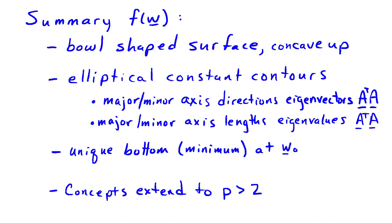The contours of constant value of f(w) are elliptical, and the major and minor axis directions correspond to the eigenvectors of AᵀA, while the major and minor axis lengths correspond to the eigenvalues of AᵀA. We've only drawn this for p = 2, but the concepts extend: for p = 3, the contours of constant f(w) are ellipsoids centered on w₀. Being able to visualize this cost function as a bowl is really useful and will be something we'll return to as we look at variations on the least squares problem in the future.